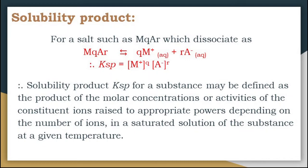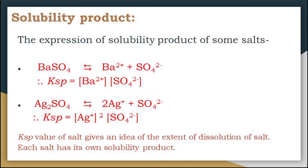Some examples of solubility product expressions: for barium sulfate, which gives one mole of Ba²⁺ and one mole of SO₄²⁻, Ksp = [Ba²⁺][SO₄²⁻]. For silver sulfate, which gives 2 moles of Ag⁺ and 1 mole of SO₄²⁻, Ksp = [Ag⁺]²[SO₄²⁻]. The Ksp value of a salt gives an idea of the extent of dissolution; each salt has its own solubility product value.